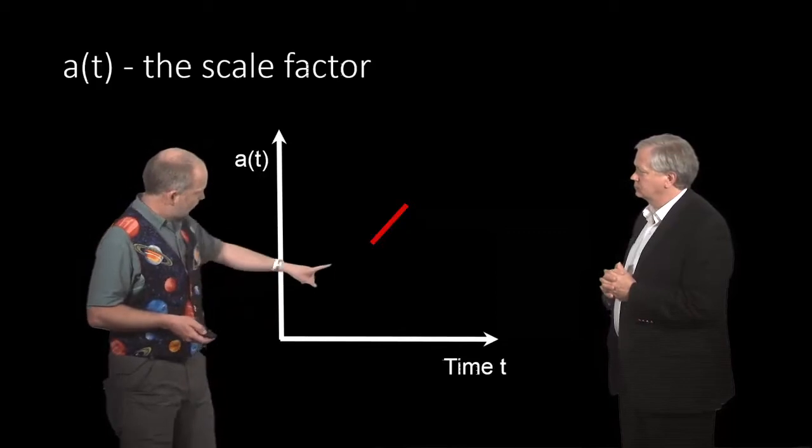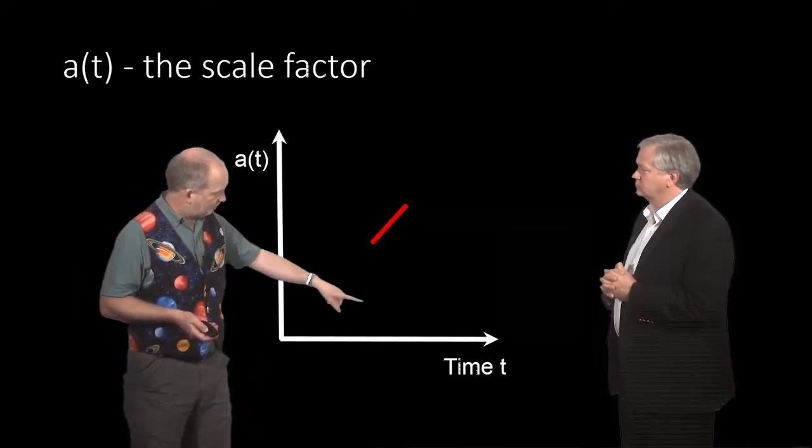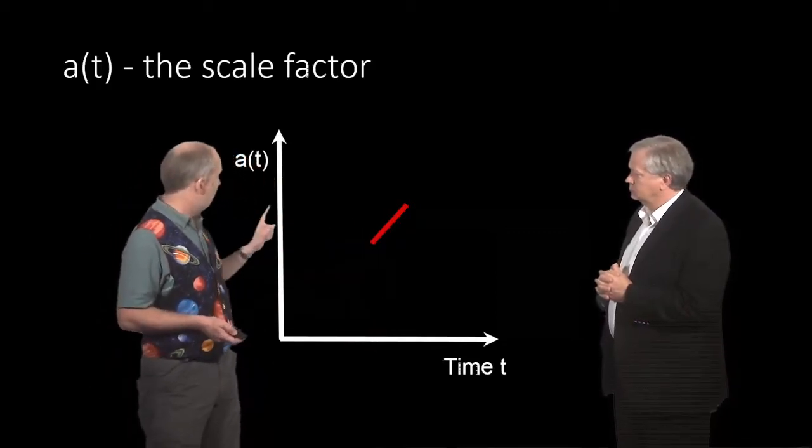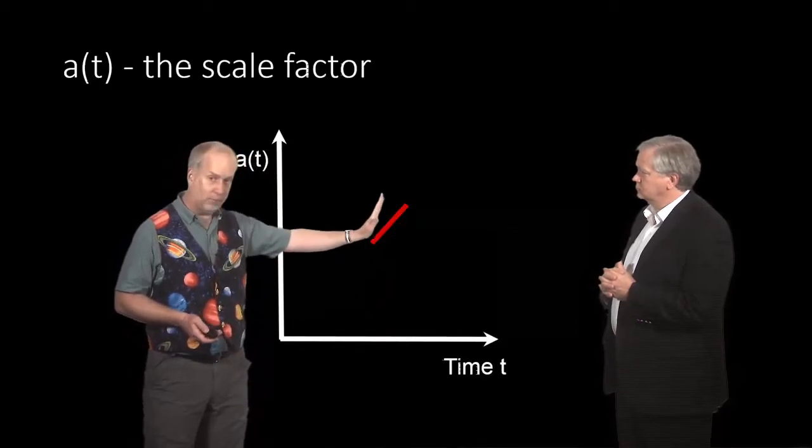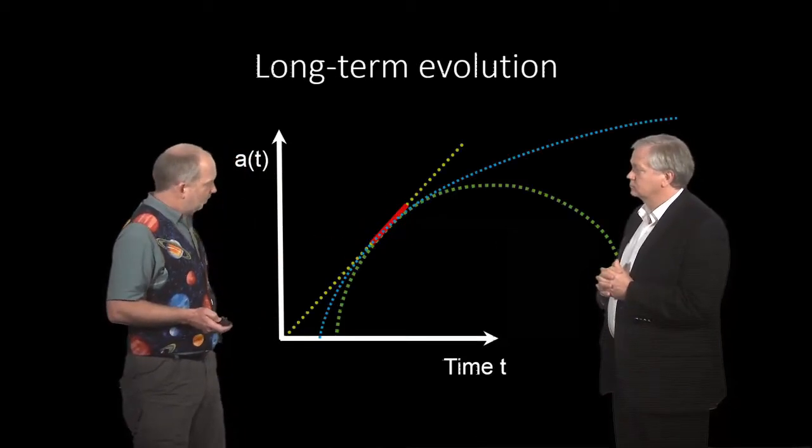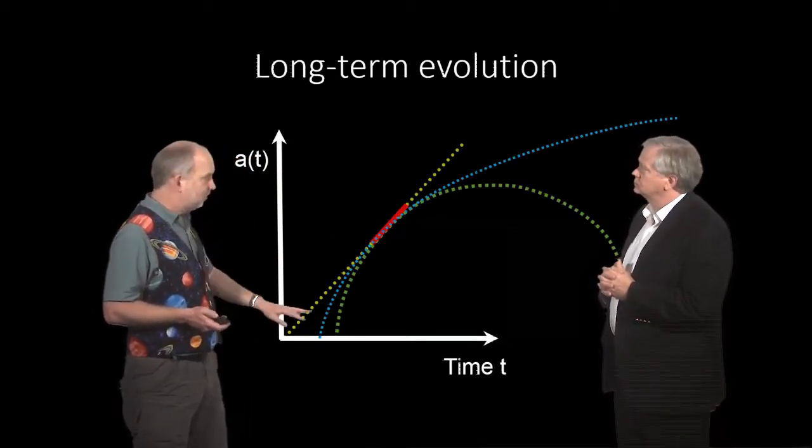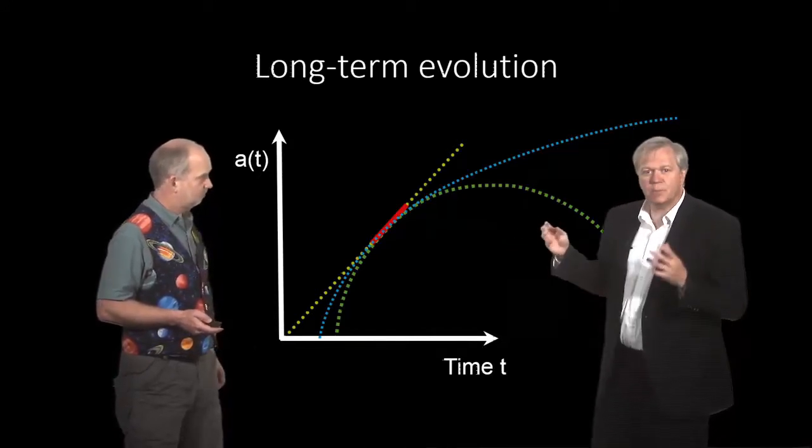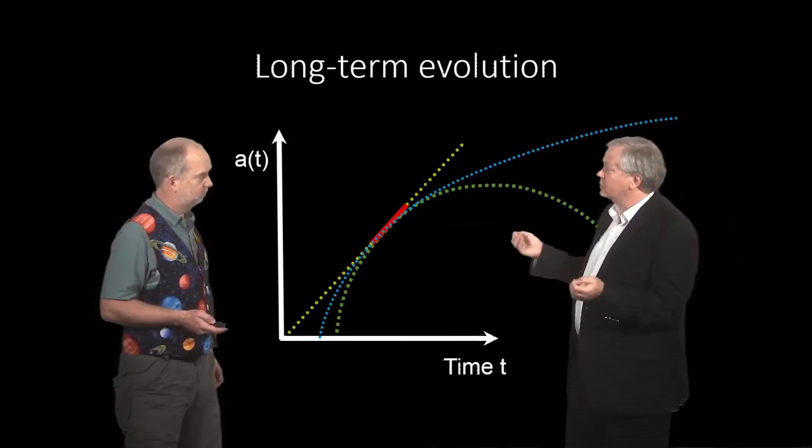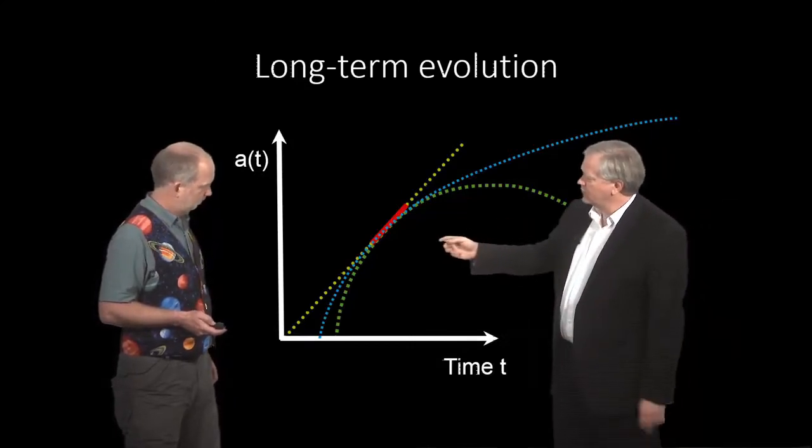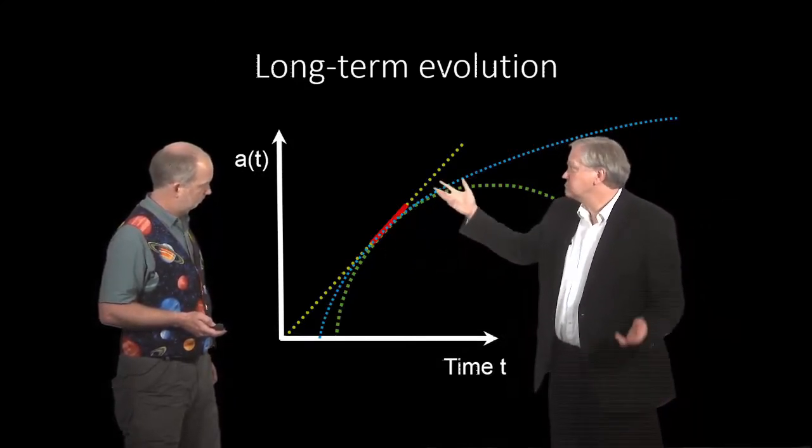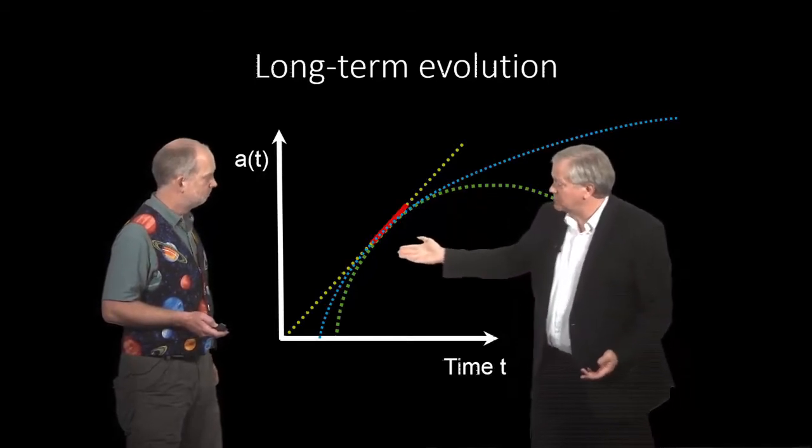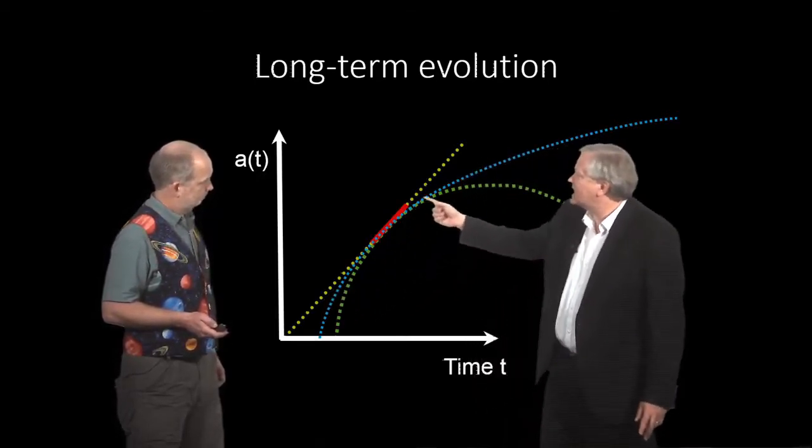We know that at the moment space is expanding. So at time t equals today, a(t) is getting bigger, so it's sloping up this way. But in the past, it could be one of these three models we've been talking about. This is the dynamics of the universe depending on how much stuff there is. If the universe is completely empty, gravity is not doing anything, and so the universe just keeps expanding at the same rate.